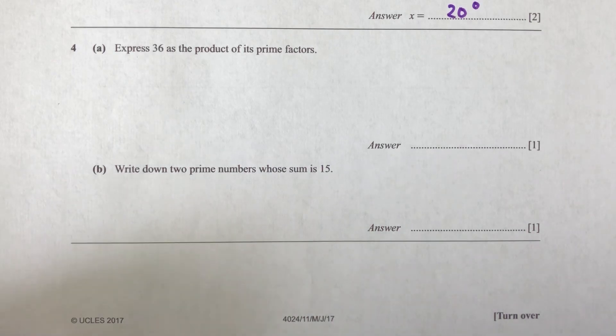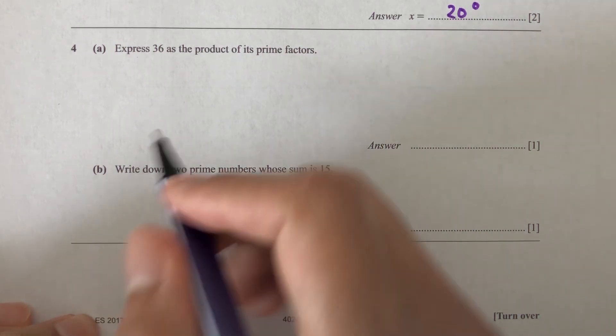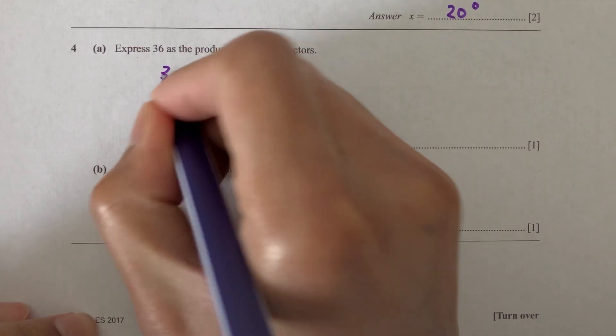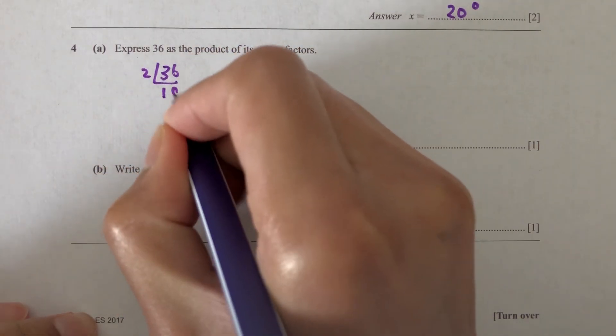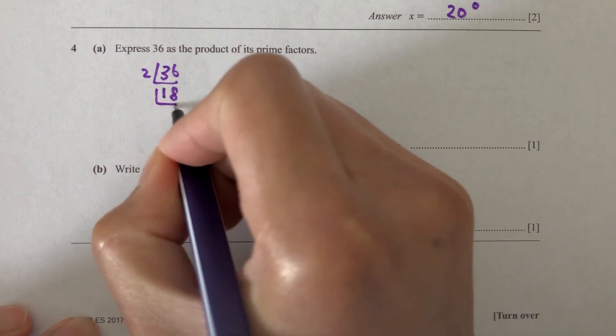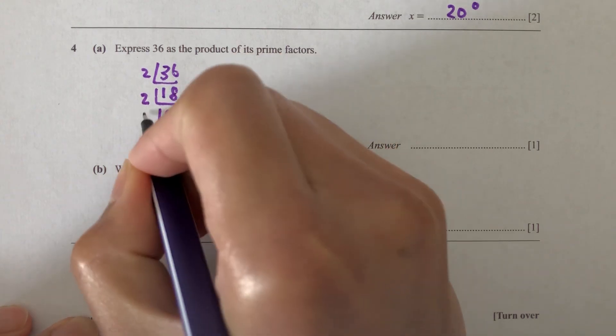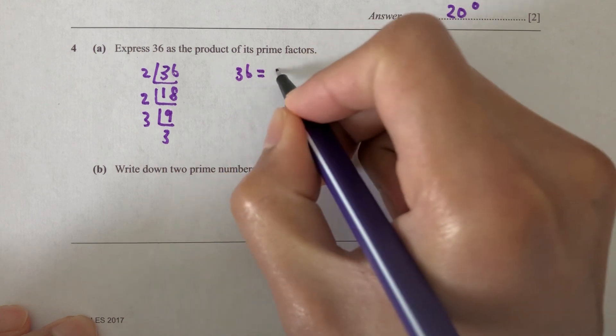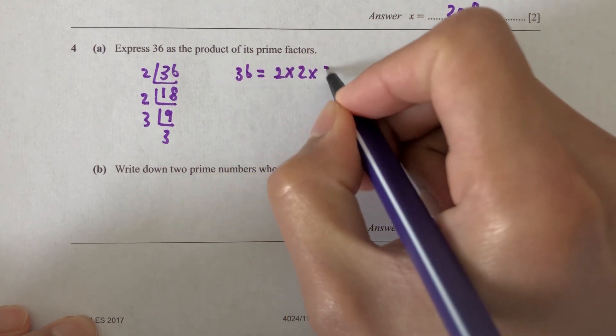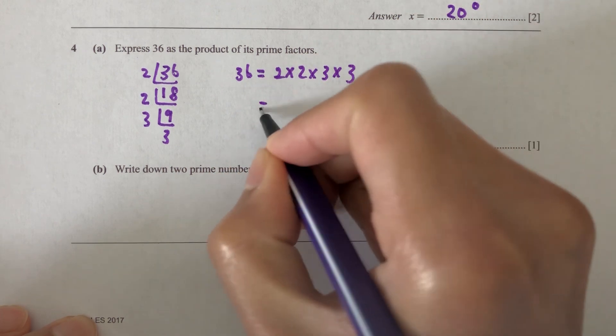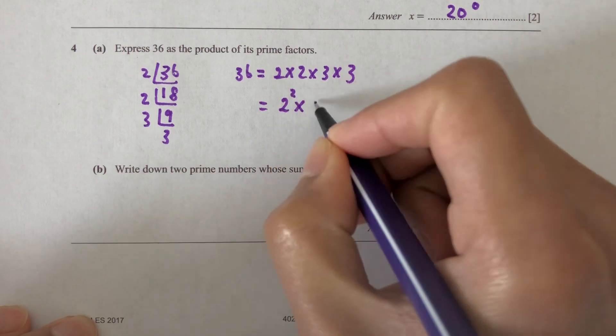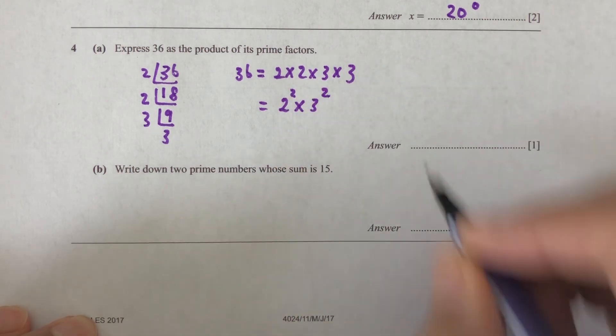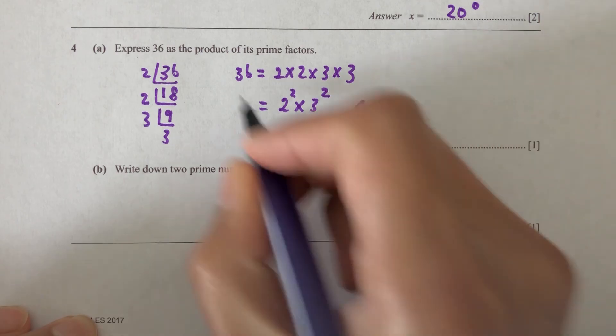Question number four, part A. Express 36 as a product of its prime factors. So let's do it. So 36 divided by 2, that will be 18. Divide by 2, that will be 9. Divide by 3, that will be 3. So 36 is equal to 2 times 2 times 3 times 3, which is 2 squared times 3 squared. So that's it. That's your answer for part A.